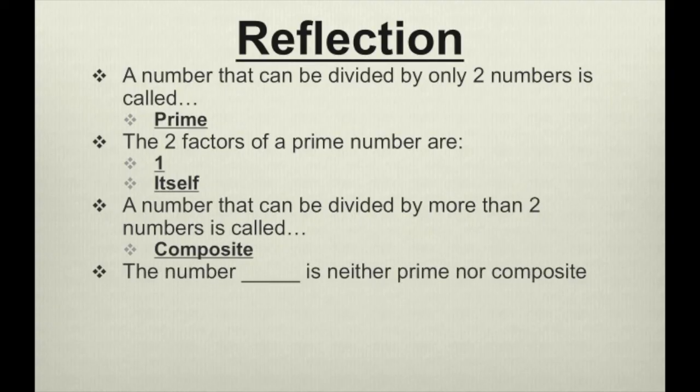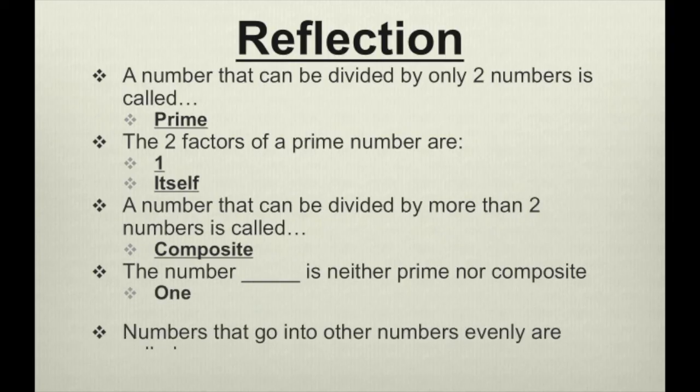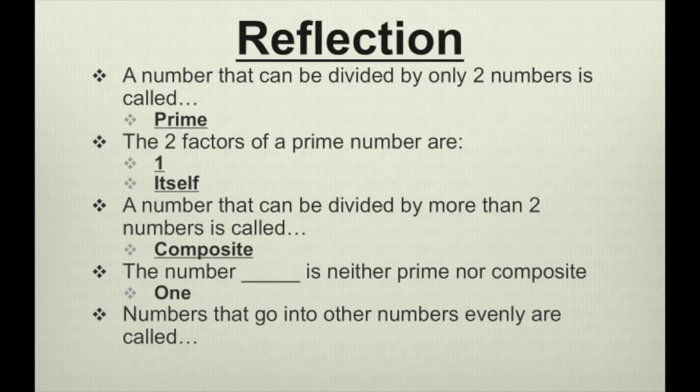The number 1 is neither prime nor composite — it's a very special case. And numbers that go into other numbers evenly or without a remainder are called factors.